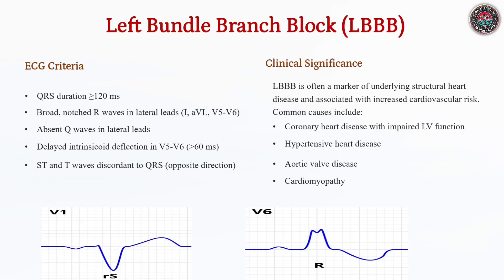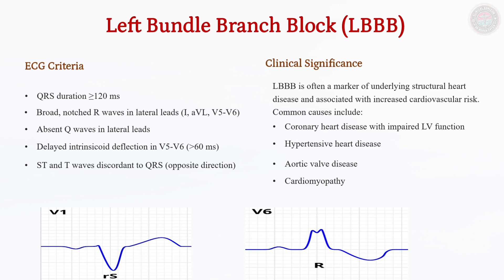LBBB presents with a broad, notched R-wave in leads I, AVL, and V5–V6, the absence of Q-waves in lateral leads, and discordant ST-T wave changes. It is often associated with coronary artery disease, hypertension, or structural heart disease. In the setting of acute chest pain, new or presumed new LBBB can obscure STEMI, necessitating the use of Sgarbossa criteria to identify infarction-related changes.